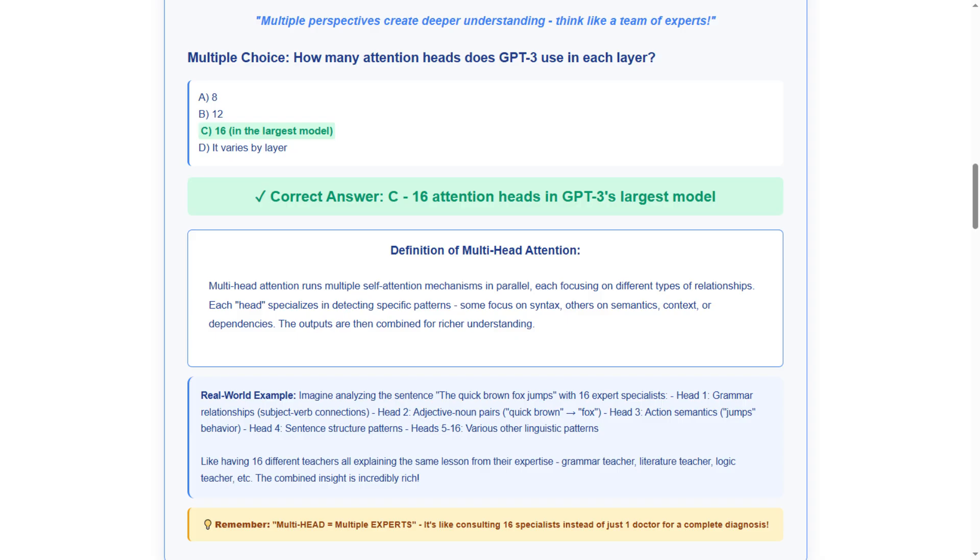The layman explanation shows how it's like having 16 expert specialists analyzing one sentence, a grammar teacher, literature teacher, logic teacher, and 13 others, each providing unique insights. This creates incredibly rich combined understanding. Think of it as expert consultation team.